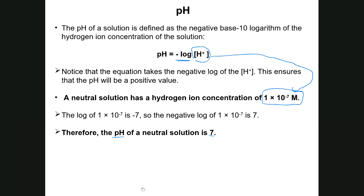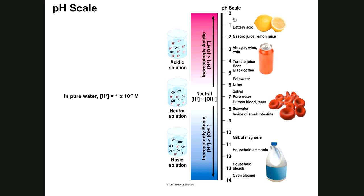These pH values are derived from the actual concentration of protons in solution, but the scale is easier to understand. Instead of saying pure water has a proton concentration of 1×10⁻⁷ M, you take the negative log of that value, which equals 7. Thus on the pH scale, pure water has a pH of 7 — a neutral pH.